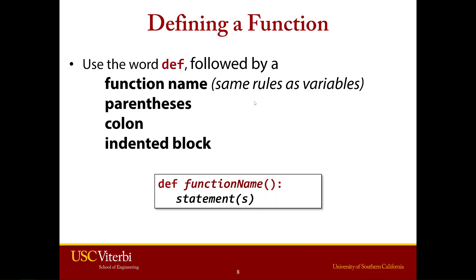Now let's get into the syntax. When we go to actually define a function, we have this basic code block. We have the word 'def', which you may have seen before. Then you're going to have the name of the function. The function name follows the same rules as variables — you can't have it start with a number, no special characters, etc. Then we've got a colon, and then we're going to define a block of code that's tabbed over. So a function is just a code block, just like an if or a while — it's just doing a slightly different process. The new keyword here is 'def', short for define.